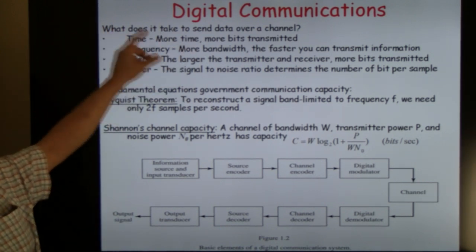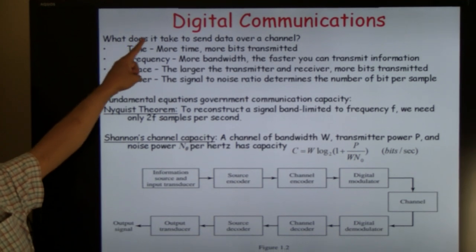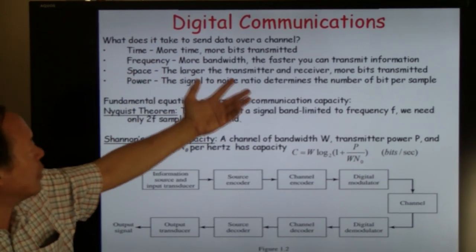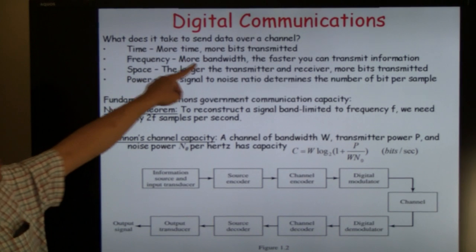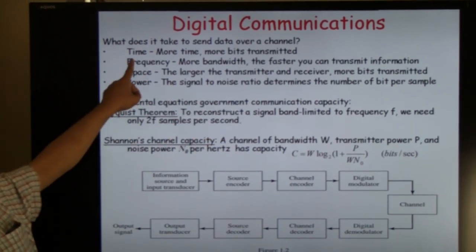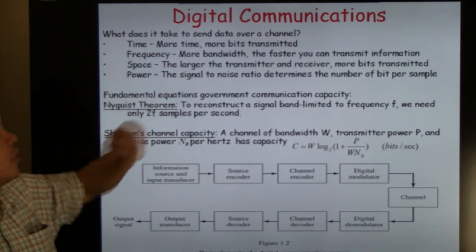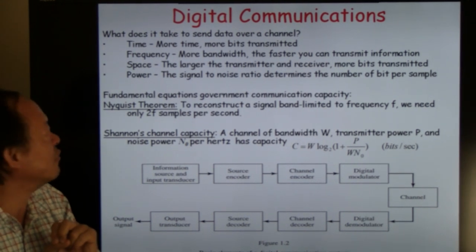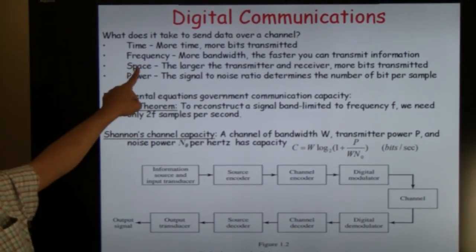Just to recap, in order to communicate, either in analog format or digital format, you need time. The more time, the more information you can transmit. You also need frequency. The more bandwidth you have, the faster you can transmit information.